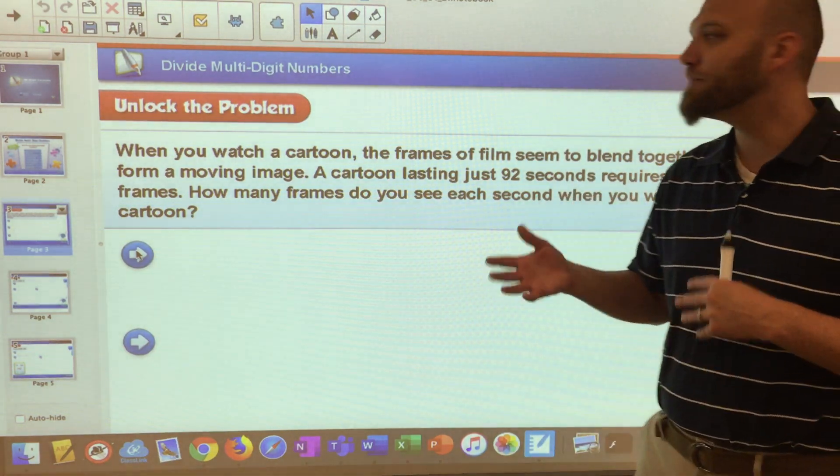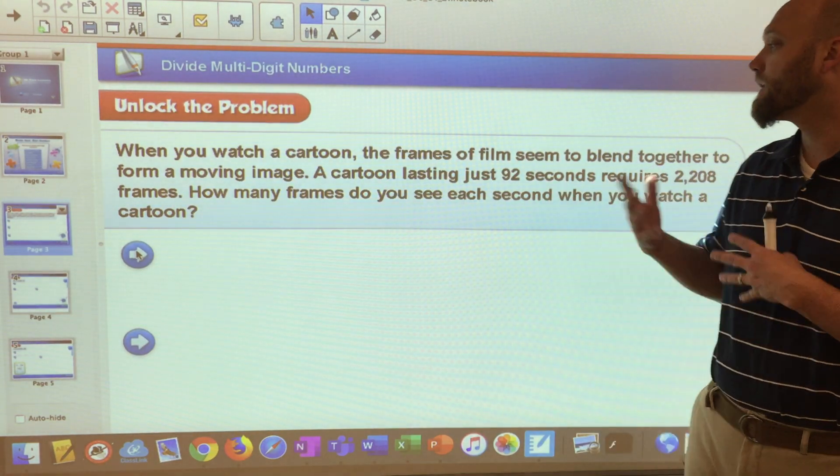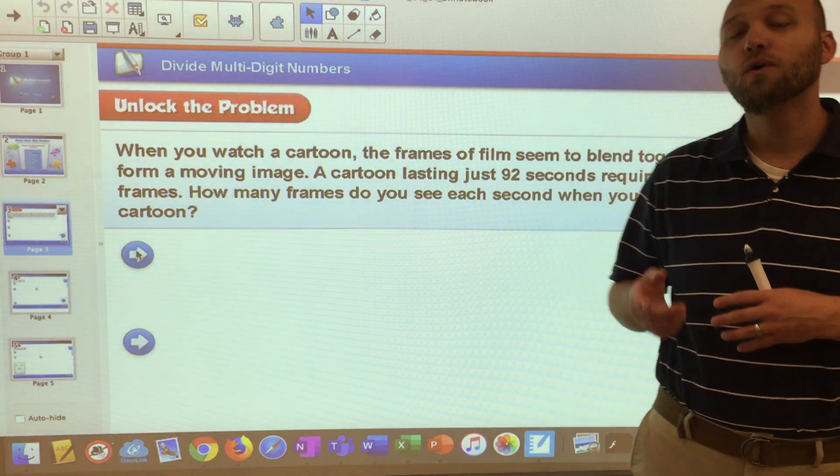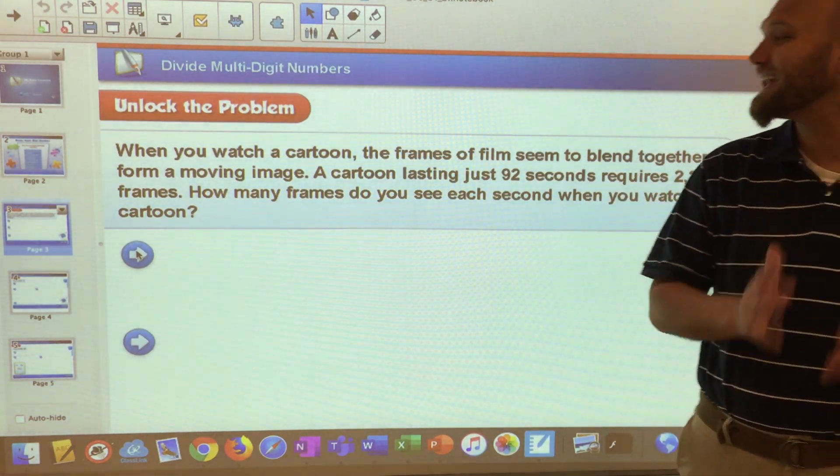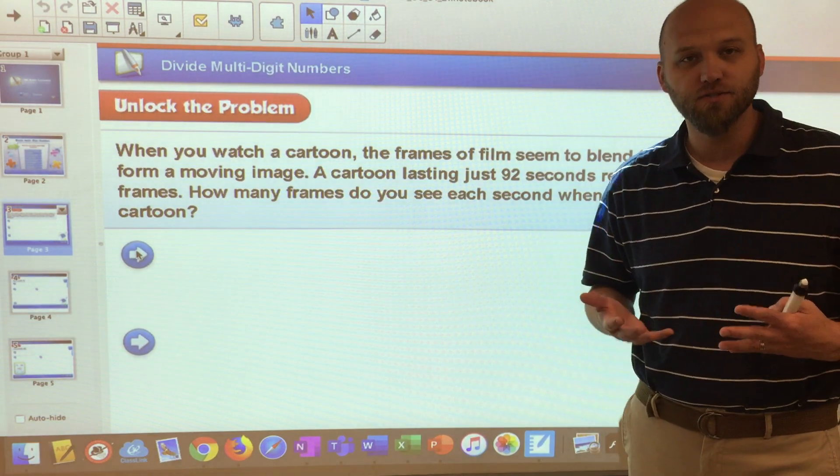So let's start with a word problem. When you watch a cartoon, frames of the film seem to blend together to form a moving image. A cartoon lasting just 92 seconds requires 2,208 frames. So how many frames do you see each second when you watch a cartoon?